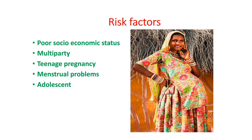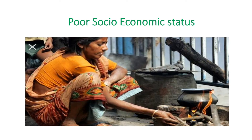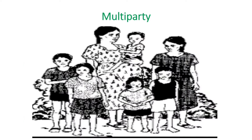Risk factors also include multi-parity mothers, teenage pregnancies, menstrual problems, and adolescent girls. People in poor socio-economic status and under the poverty line are unable to take an adequate amount of iron in their food, which may lead to anemia. A multi-parity mother with inadequate spacing between pregnancies is at risk of anemia due to inadequate iron stores, increased demand, decreased intake, and no time to replace iron depletion due to frequent pregnancies.